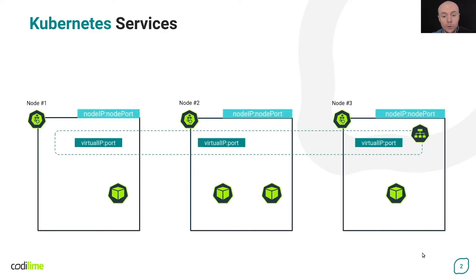As you may know, services in Kubernetes are implemented by kube-proxy by default. This applies to the cluster IP, node port and load balancer types of service. This video is intended primarily for those who have a basic understanding of Kubernetes services and know what kube-proxy is. If you're not familiar with these topics, we strongly recommend you to watch our other video, which gives a brief overview of the basics.